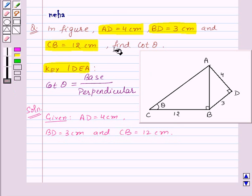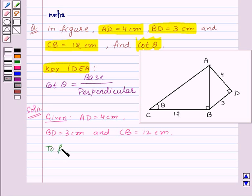And we need to find cot theta. Now here angle ACB is given to be theta, angle ABC is a right angle, and angle ADB is also a right angle. So that means triangle ABC and triangle ADB are right angled triangles.